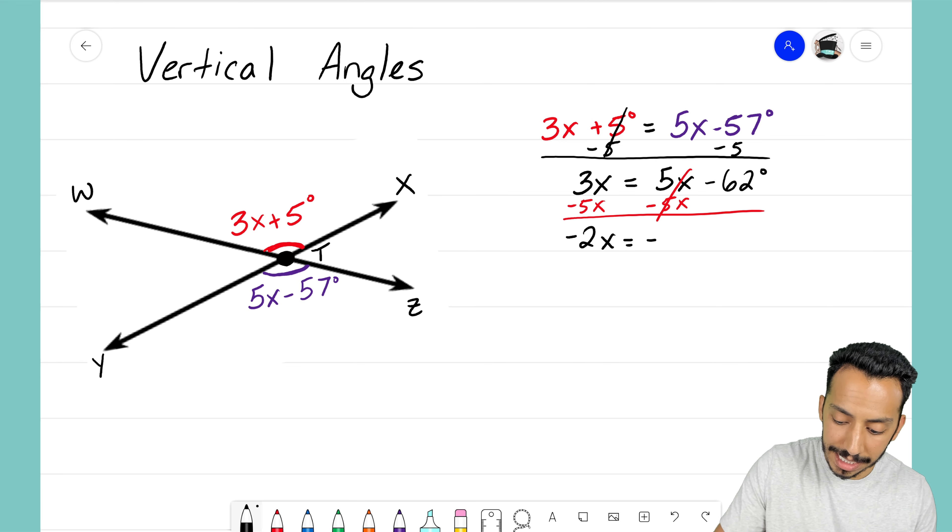And that equals negative 62 degrees. Notice that I'm just moving parts around so I can isolate that x variable, and I almost have done it. I almost have x on its own. Right now I have negative 2x, I don't want negative 2 of them, I just want one single x.